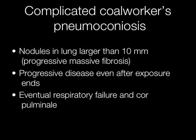In complicated Coal Workers' Pneumoconiosis, nodules are larger than 10 mm, otherwise known as progressive massive fibrosis. It is a progressive disease even after exposure to coal dust ends, resulting eventually in respiratory failure and cor pulmonale.